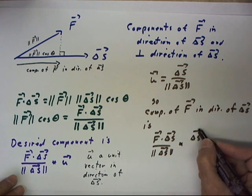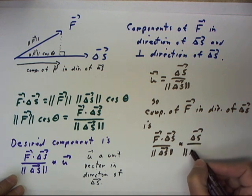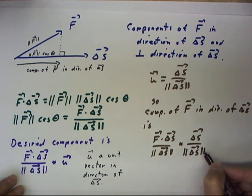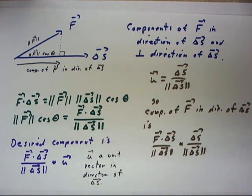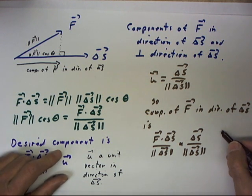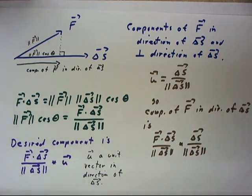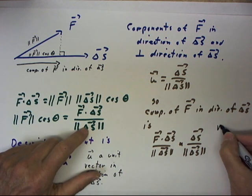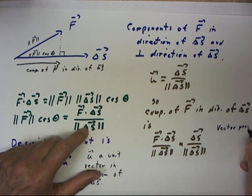which is delta s over the magnitude of delta s. And we call this the vector projection. This is the vector projection of f onto delta s.